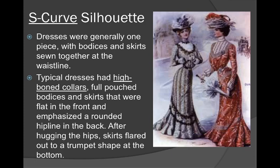These dresses were usually one piece. They had bodices and skirts sewn together at a natural waistline and they had high-boned collars. They had that pouched bodice where it goes out, and the skirts were flat in the front with a very rounded hip line at the back. It usually hugged the hips and flared out into a trumpet style — so it looks like a trumpet.